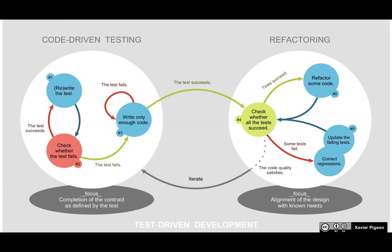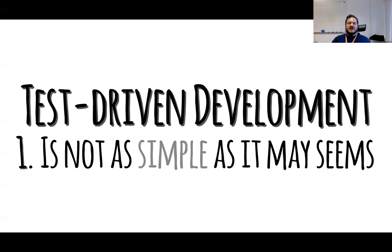For example, depending on the refactoring, you may need to align your old test cases with the new code design. You might need to fix some regression bugs that you cause during refactoring. Another important decision is for the developer to decide when they are satisfied with the quality of the code so they can move on to the next TDD cycle. So my first hidden cost is that TDD may not be as simple as it seems.